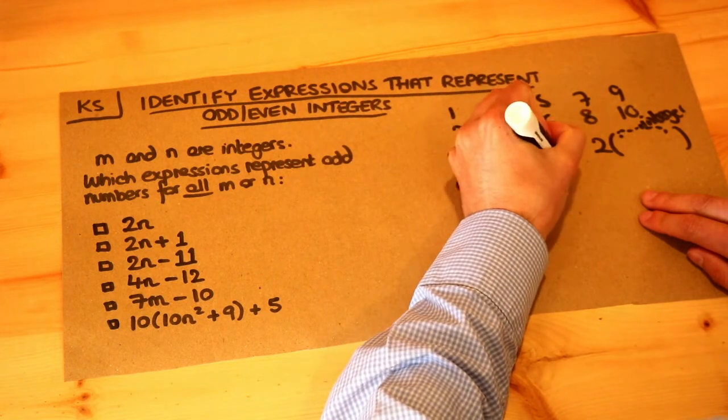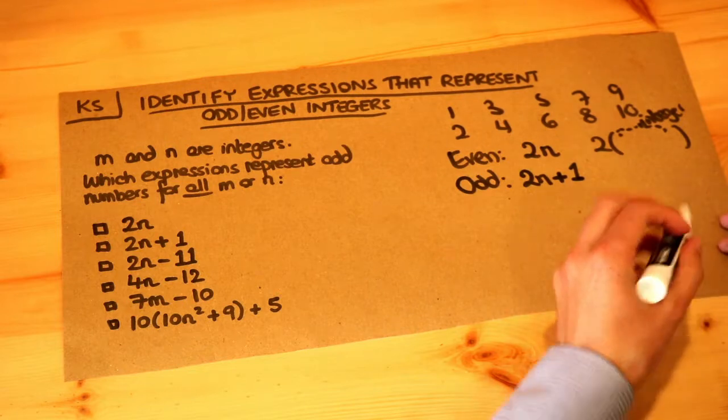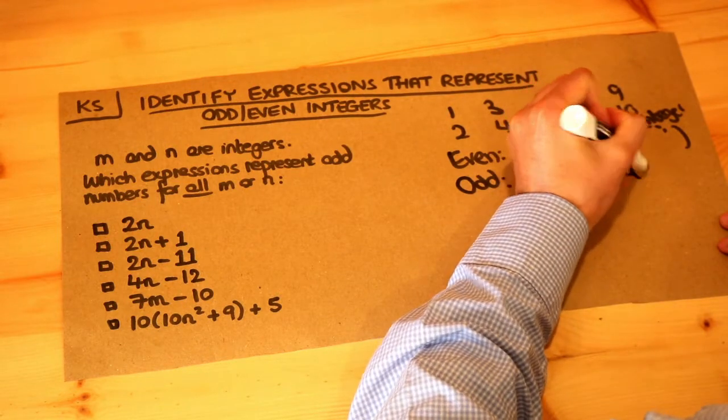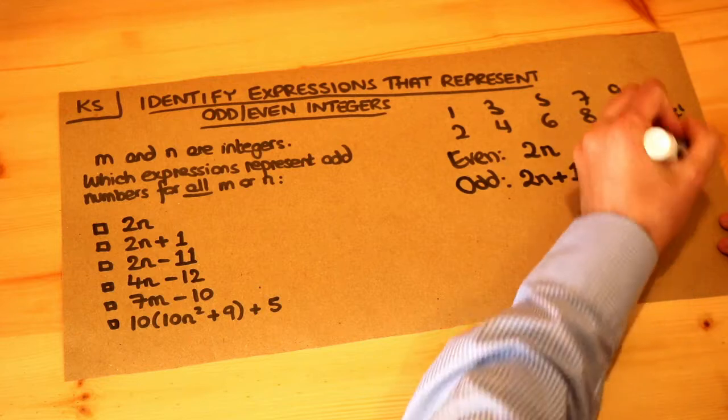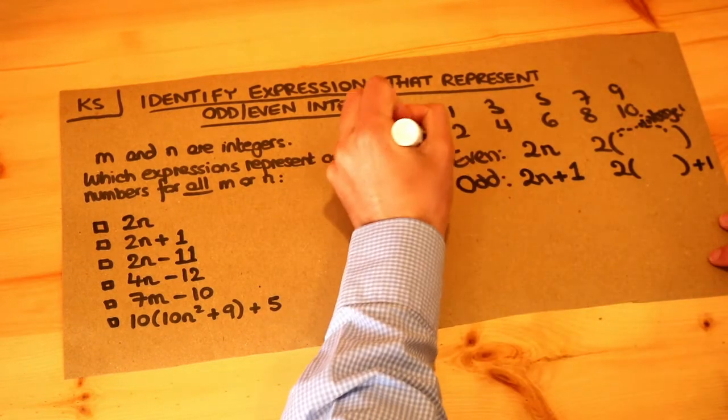2 times that will definitely be even. And if we added 1 to it, 1 more than an even number, that would be an odd number. Or more generally, if we had 2 times some expression that we knew was an integer and we added 1 to it, then we know that's guaranteed to be an odd number.